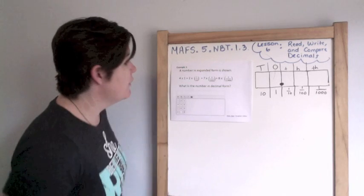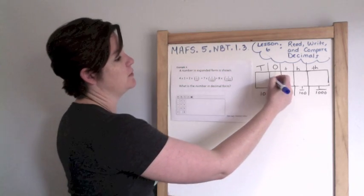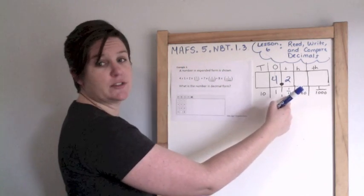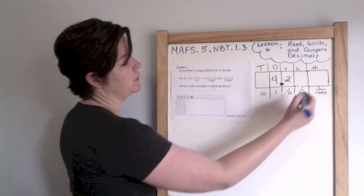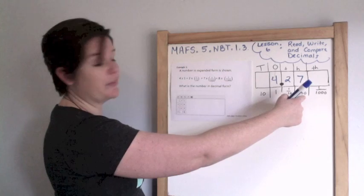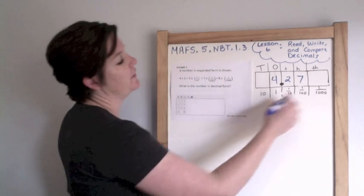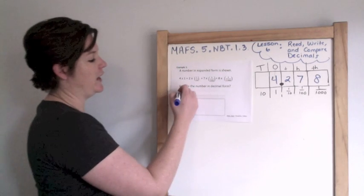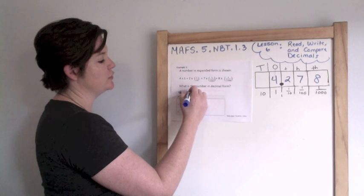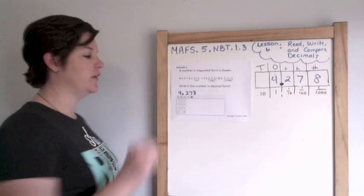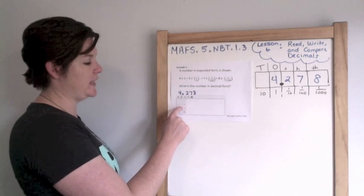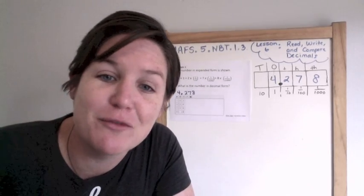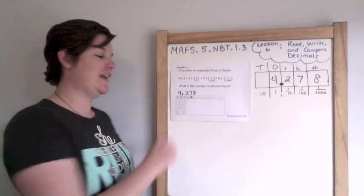Four times one — that's in the ones place, so four. Plus two times one-tenth, so there are two tenths. Plus seven times one-hundredth, so there are seven hundredths. Plus eight times one-thousandth, so there are eight thousandths. Written in decimal form, we have four and two hundred seventy-eight thousandths: four point two seven eight.